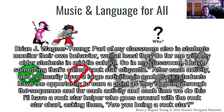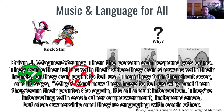Part of my classroom is students monitoring their own behavior — at least with my older middle school students. I have something called rockstar etiquette. After each of the three main activities in each class, students have the opportunity to earn a point. A rockstar helper goes around with the rockstar chart asking, 'are you being a rockstar?' The student responds yes or no — with their voice, their hands, or by pointing. They turn the chart over and it says 'why,' and now they have to explain why, then they earn their point. It's all about interaction, empowerment, independence, ownership, and engaging with each other.